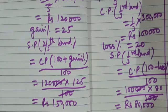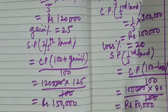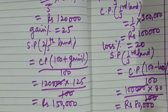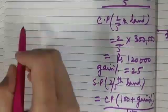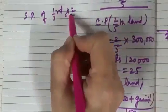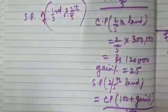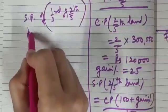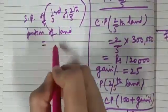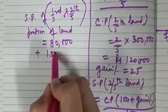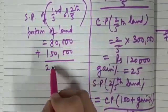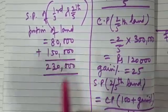What are the total selling price of the two portion of the lands? 80,000 and 1 lakh 50,000. We will be writing now, SP of one third and two-fifth portion of land. That is equal to 80,000 plus 1,50,000. You add it. What do you get? You get 2,30,000.